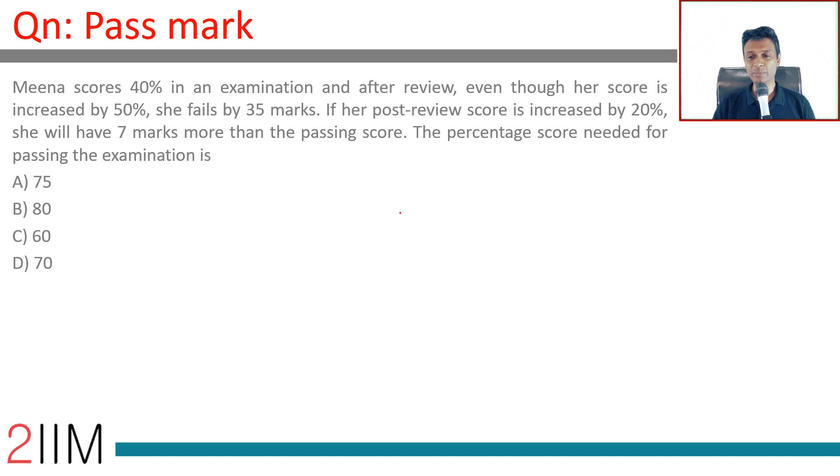Meena scores 40 percent in an examination and after review, even though her score is increased by 50 percent, she fails by 35 marks. She scores 40 percent, her score is increased by 50 percent, so she will reach 60 percent.